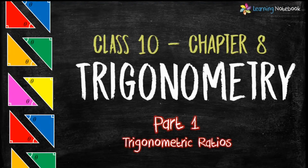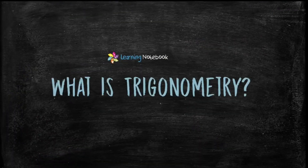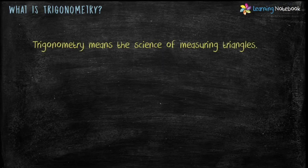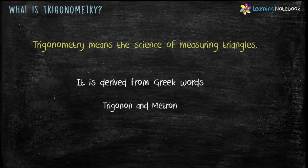Hello students, welcome to our channel Learning Notebook. In today's video we will do part one of chapter trigonometry. In this part one we will learn trigonometric ratios. Trigonometry means the science of measuring triangles. The word trigonometry is derived from Greek words trigon and metron. Trigon means triangle and metron means measure. Trigonometry is the branch of mathematics which deals with the measurement of sides and angles of a triangle. In class 10 we will only deal with right angle triangles.